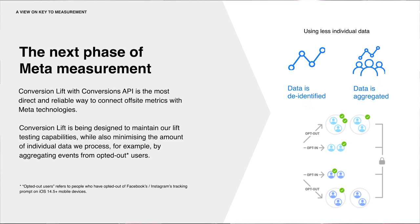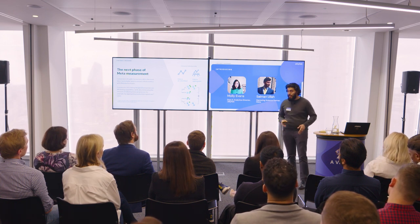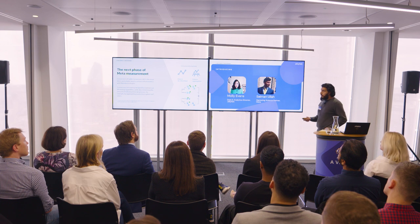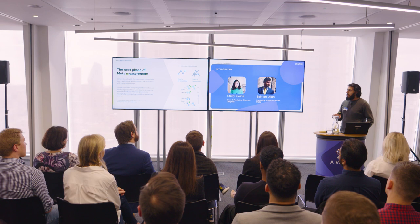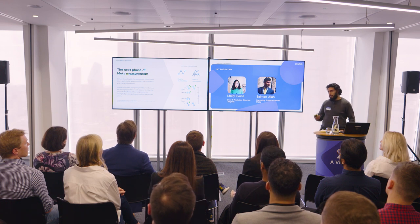On measurement, some of our measurement solutions are evolving, and Conversion Lift is one of those. Conversion Lift is an incrementality-based solution by Meta measuring incremental conversions between those exposed to advertising and those who weren't. It has also gone through its evolution since October, where it's enabled by Conversions API and is now a requirement. Here we're focused on measuring the true business impact of conversions through advertising, while minimising the amount of data processed at the individual level, using more de-identified and aggregated data for those who have opted out, such as iOS 14.5.